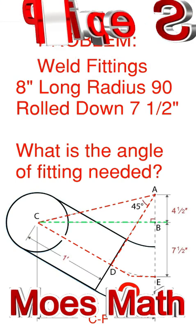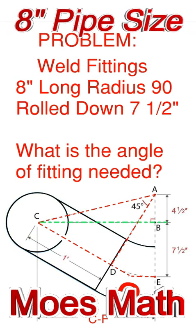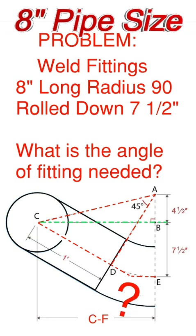We're dealing with weld fittings and we have an 8 inch long radius 90 and it's rolled down to a 7.5 inch elevation change. We're going to find out what is the angle of fitting needed to obtain this change.